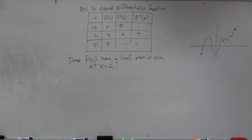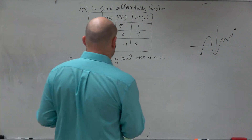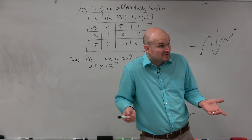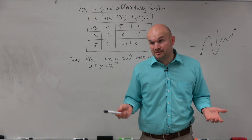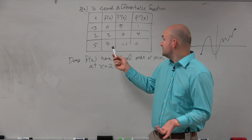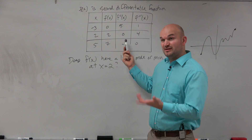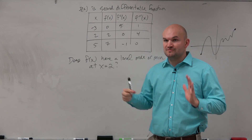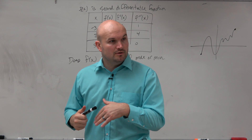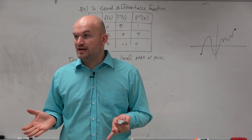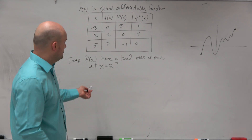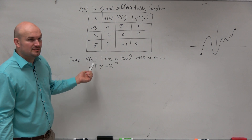If we're trying to determine, in this case, does f of x have a local max or a local min at x equals 2? We look at 2, and the first thing we could do is look at the first derivative. By the first derivative test, it's changing from positive to negative. So if the slope is changing from positive to negative, we could say that we have a relative max, or a local max at x equals 0.